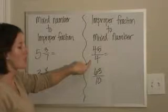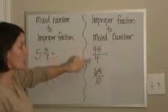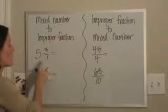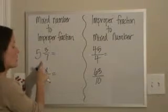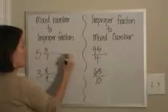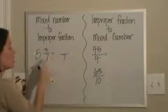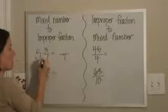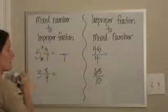An improper fraction is where your numerator is larger than your denominator. To go between the two, when you have a mixed number, you keep the same denominator. You multiply your denominator times your whole number, then add your numerator.